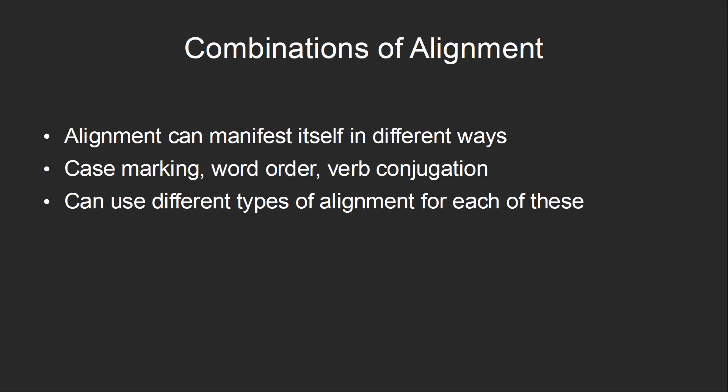Because alignment can be indicated in many different ways — such as case marking, word order, and verb conjugation — a language may use different types of alignment for different elements of a single sentence. So in the Rushani example, the case marking is transitive-intransitive, but the word order is still distinctly nominative-accusative, even in the past tense.